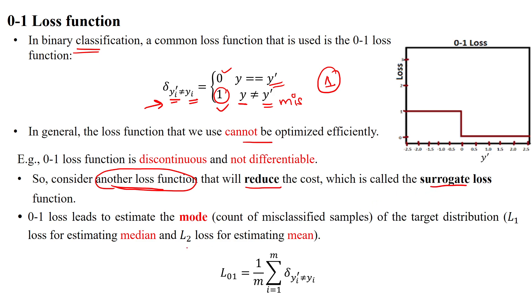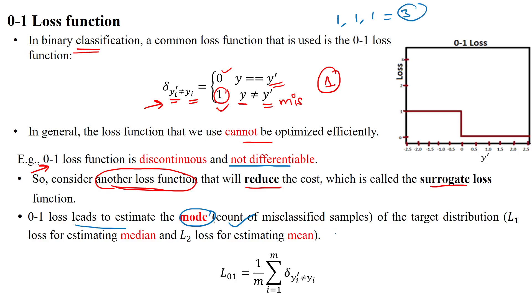When selecting an alternative loss function, it is called a surrogate loss function. We need a surrogate because the zero-one loss function produces discrete values that cannot be differentiated. So we go for an alternative called the surrogate loss function. The zero-one loss function only estimates the mode — counting the number of misclassified samples. We can use L1 loss for median and L2 loss for mean.